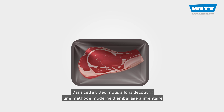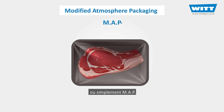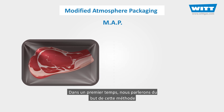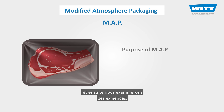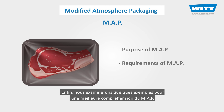In this video, we're going to learn about a modern method of food packaging called modified atmosphere packaging, or simply MAP. First, we'll talk about the purpose of this method and then we'll take a deeper look at its requirements. Finally, we'll consider some examples in our further understanding of MAP.